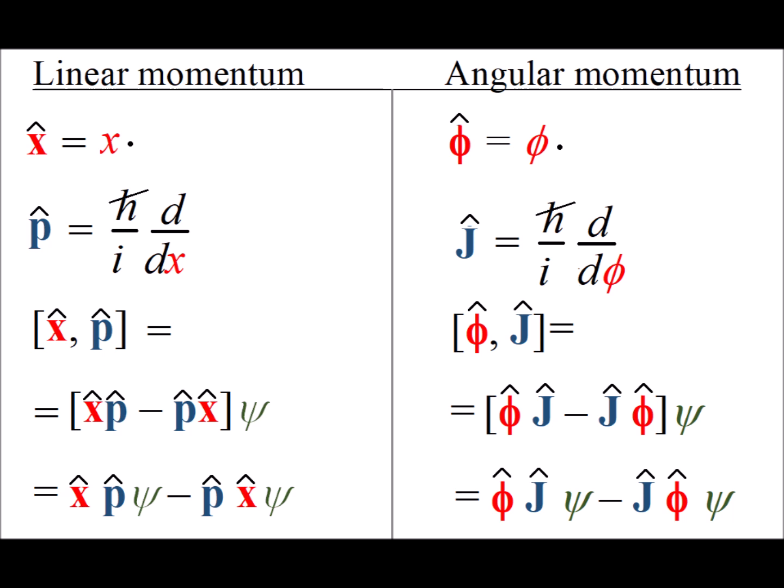By definition of what a commutator is, we get that for the linear case, we have x times p applied to psi minus p times x applied to psi. Just as on the right hand side, we have phi times j of psi minus j times phi of psi.